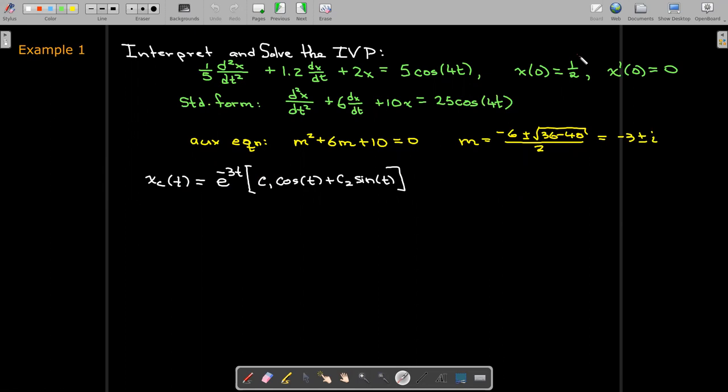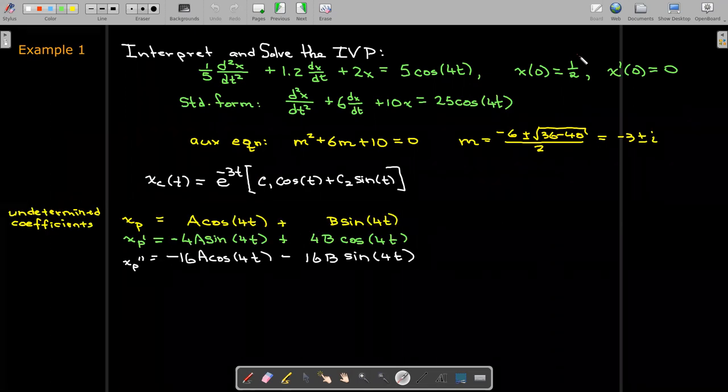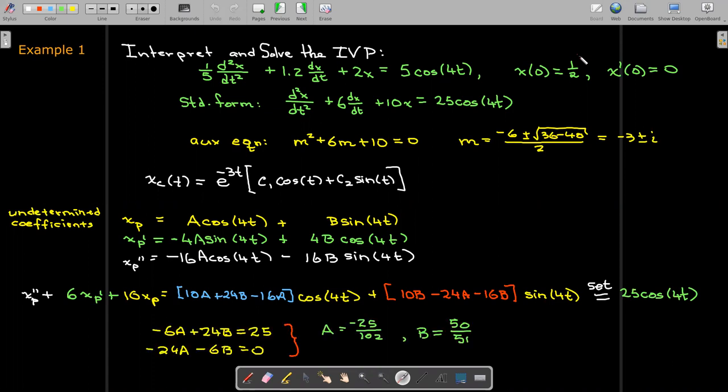And now we need a particular solution. This is a non-homogeneous equation. So we use undetermined coefficients. We'll assume that the particular solution is the sum of a sine and a cosine function. We just need to determine the coefficients. So we'll go ahead and take the first and second derivative of our assumed form of the particular solution and substitute that back into the differential equation, and then compare the corresponding coefficients. That gives us a system of equations which we can solve to get these values for a and b.